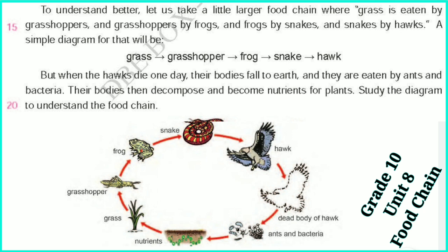Study the data again to understand the food chain: Grass → Grass Chopper → Frog → Snake → Hawk → dead body of hawk → Ant → Bacteria → Nutrients → Grass → Grass Chopper — and so the cycle continues like this.